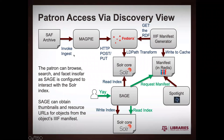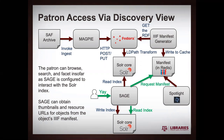Once SAGE has its index written, the patron will be able to come to a SAGE discovery view, and to the degree that SAGE has been configured to deal with its target Solr index, SAGE will be able to read that index and provide discovery functionality — search, browse, and facet. SAGE can also look at an object's IIIF manifest and improve the interaction there, getting things like resource URLs and thumbnails out of the IIIF manifest.